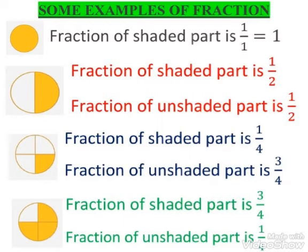The fraction of the unshaded part is 3 upon 4. In the fourth and last figure, the fraction of the shaded part is 3 upon 4, because there are 3 parts out of 4 that are shaded. The fraction of the unshaded part is 1 upon 4.